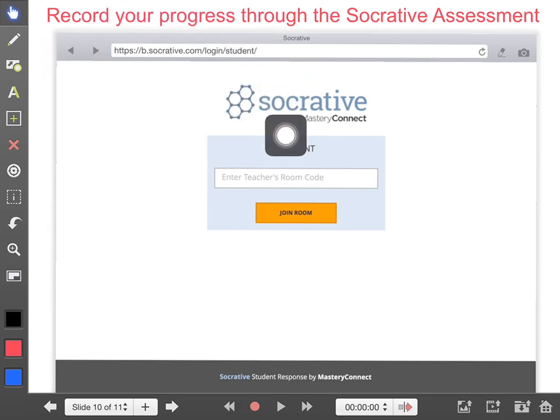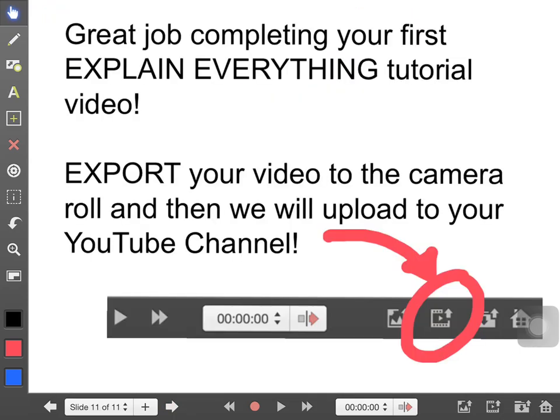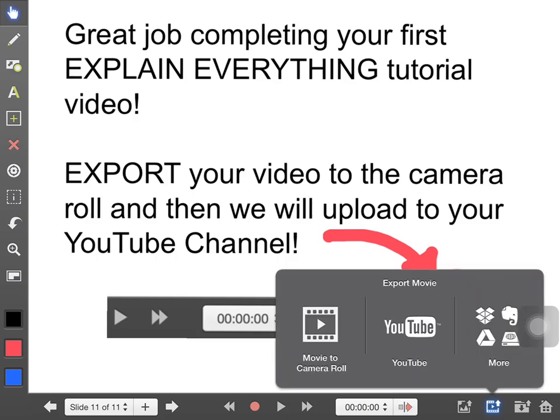Students can engage in something online—it could be a Google form. In this case, we're going to use a Socrative quiz I've already set up. Once students are done, we'll have them export to their camera roll and then upload to their YouTube channel. You can go directly to YouTube or other cloud-based services, but I prefer the camera roll so students have it and can do other things with it on the iPad.